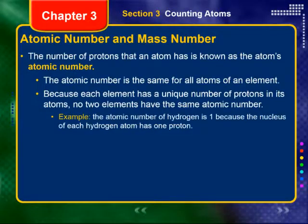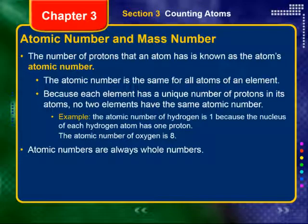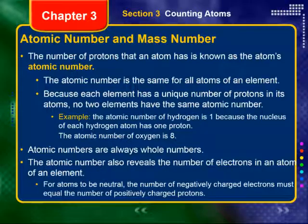Talking about atomic number and mass number. The number of protons that an atom has is known as the atom's atomic number. The atomic number is the same for all atoms of an element. Because each element has a unique number of protons, no two elements have the same atomic number. For example, the atomic number for hydrogen is 1, because the nucleus of each hydrogen atom has one proton. Oxygen has eight protons, so its atomic number is eight.